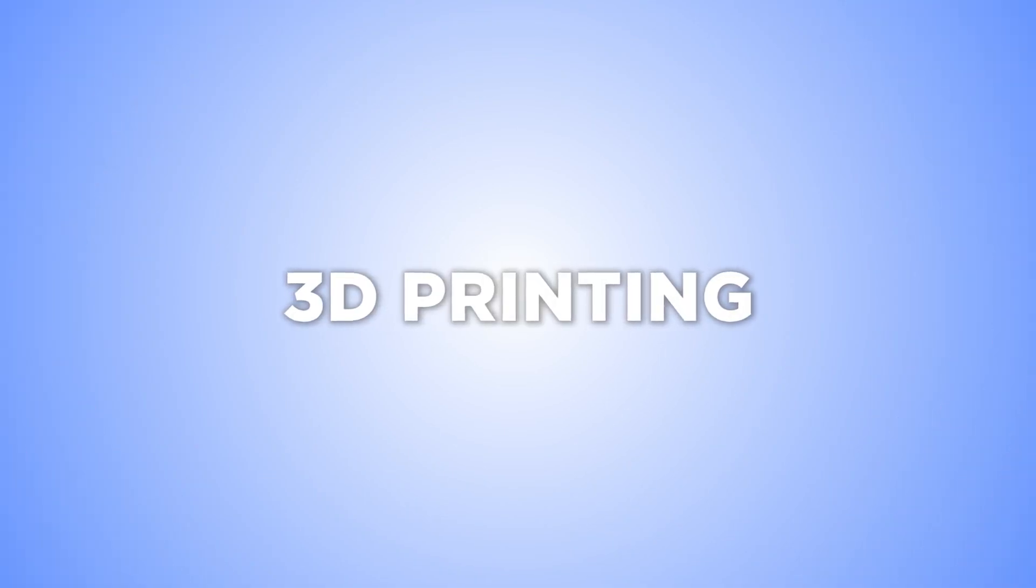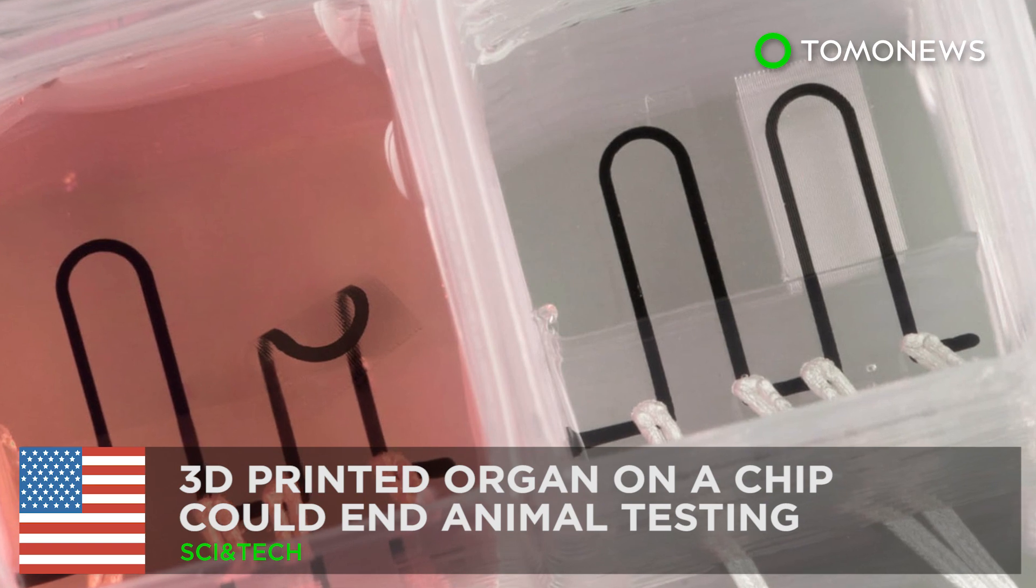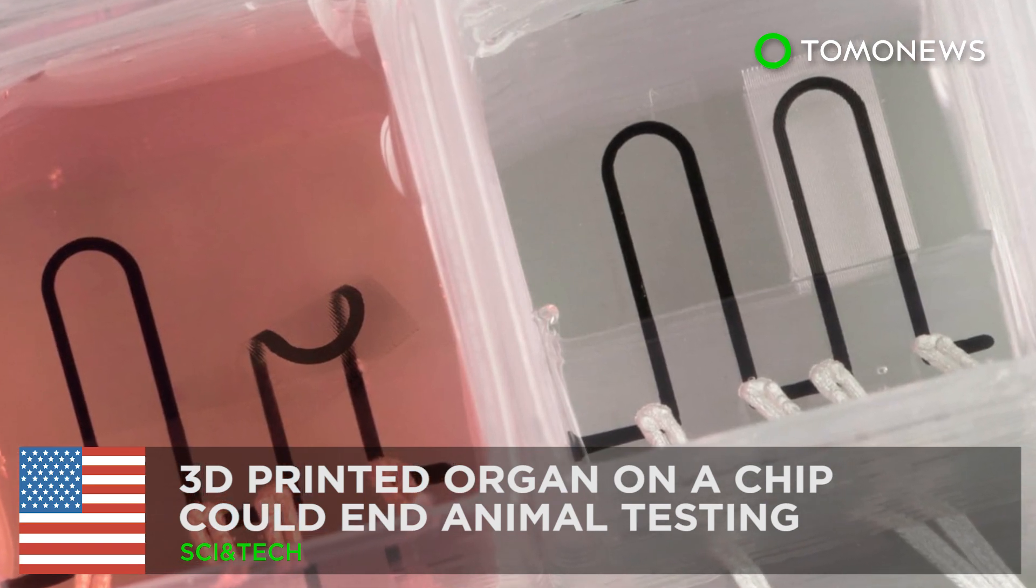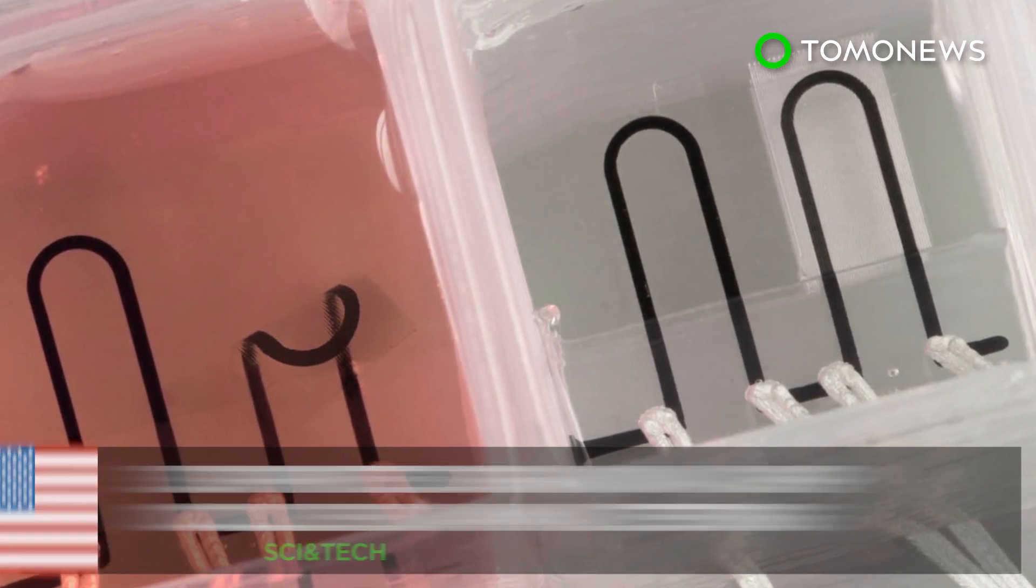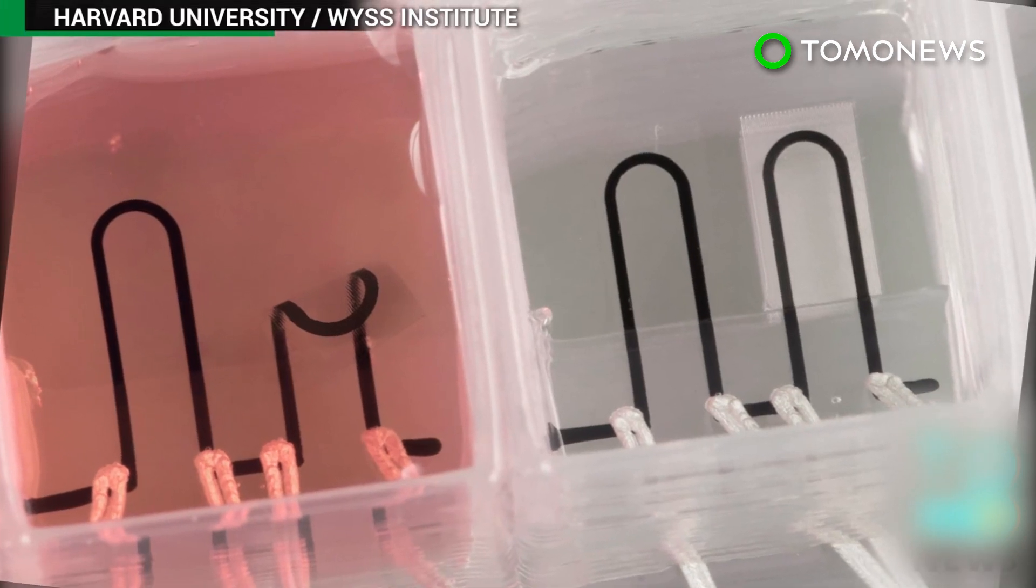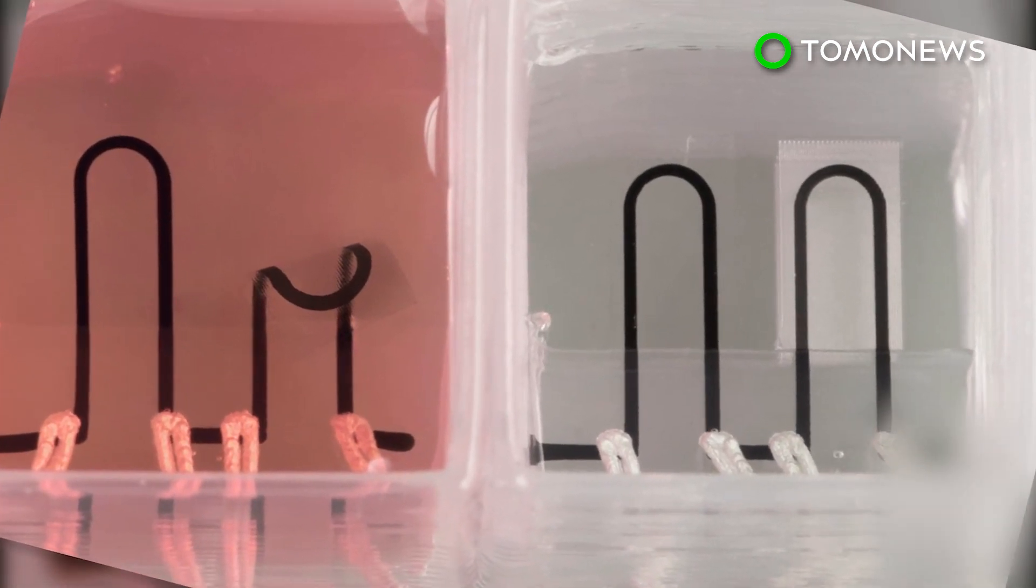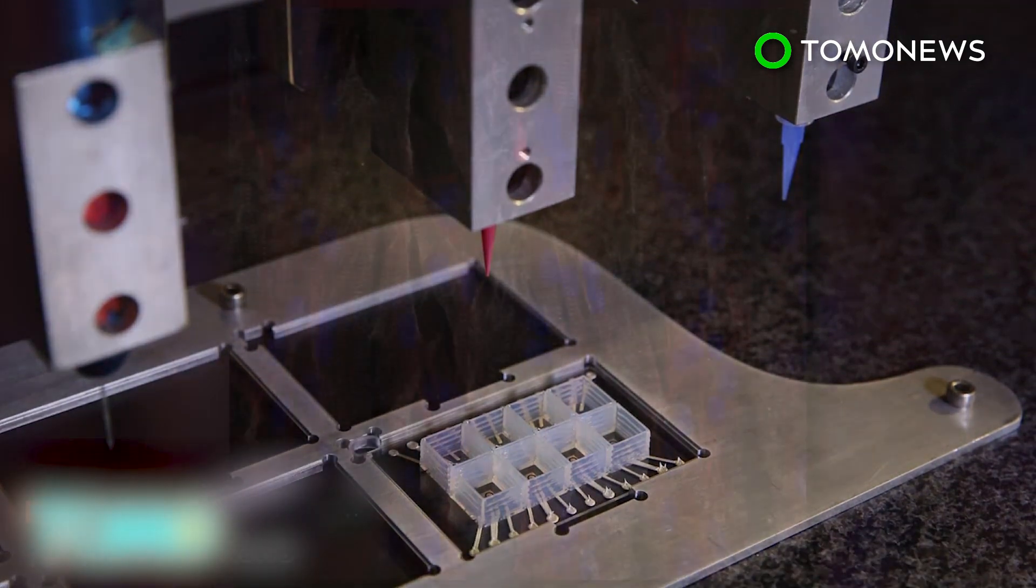3D-printing is being used for everything. 3D-printed organ on a chip could end animal testing. Harvard scientists have developed a 3D-printed heart on a computer chip, which can be used to study heart conditions without testing medical treatments on animals.